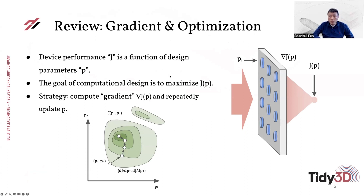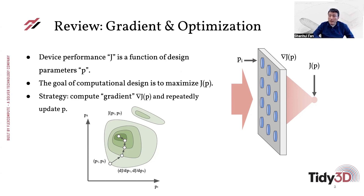Here is a brief review of what we talked about last time. In the optimization, you would like to adjust the parameters of a device so that it operates as desired. For example, in the design of a metasurface, you may want to adjust some of the geometric parameters of each metaatom until an incident plane wave focuses onto a point on the other side.